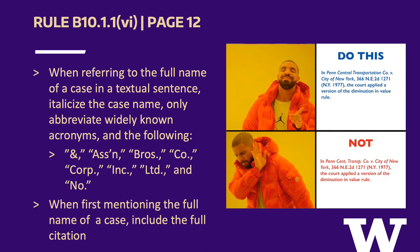Up until now, the rules we have discussed have pertained to in-line citations. When referencing a case in the text of a sentence, avoid abbreviating the words found in Tables 6 and 10. As with most Blue Book rules, this comes with an exception. If a word is commonly abbreviated, then it should be abbreviated in a textual sentence. For example, "Company" is often abbreviated as "Co.," but "central" and "transportation" are not commonly abbreviated. As a result, they would not be abbreviated in a textual sentence.